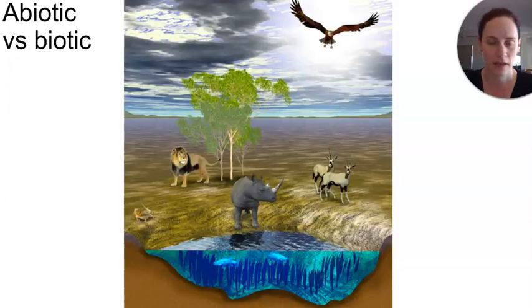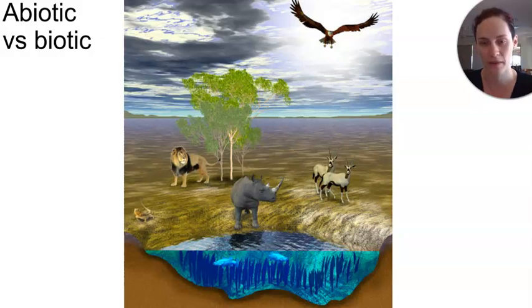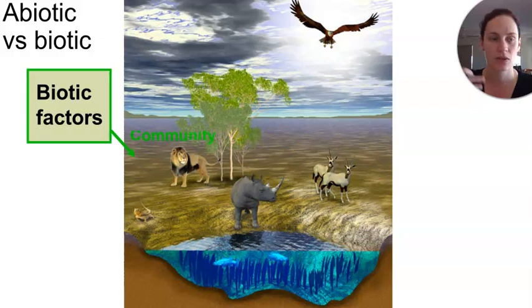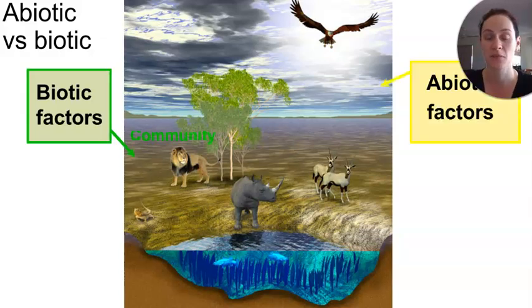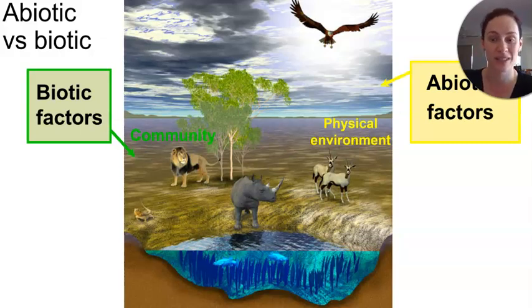Within every ecosystem, there are a number of factors at play. Both the physical features of the environment and the organisms living within it will have a huge impact on the experiences and survival of all the organisms within it. So we're talking about biotic factors, which you've seen before in junior, and we're talking about abiotic factors. The abiotic are those which we consider the physical characteristics of the environment, whereas the biotic ones are those which are directly related to other organisms within that ecosystem.